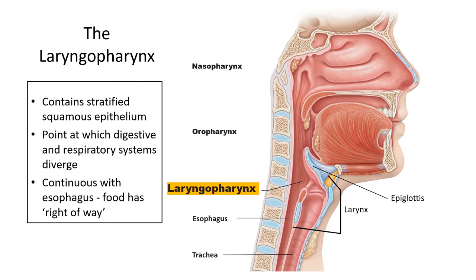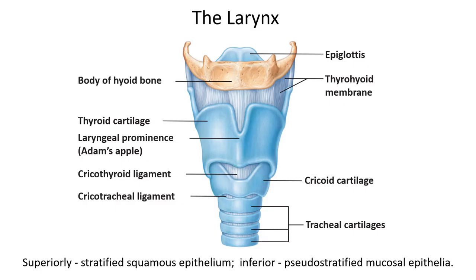This squamous epithelium continues into the esophagus. Note that the esophagus goes down the back and the trachea is in the front. The epiglottis is a flap of tissue supported by cartilage that acts like a trap door — it's open when you breathe but closes over the glottis, the opening to the trachea, when you swallow. This is why it's a bad idea to talk while eating: if you're trying to talk, the epiglottis is held open and food or fluids may go down the wrong tube. The larynx forms the glottis, supports the trachea and epiglottis, and also contains the vocal cords.